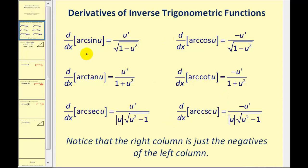The derivative of arc sine u and the derivative of arc cosine u are just opposites of one another. And the same is true for the derivative of arc tangent u and arc cotangent u, and the derivative of arc secant u and arc cosecant u.